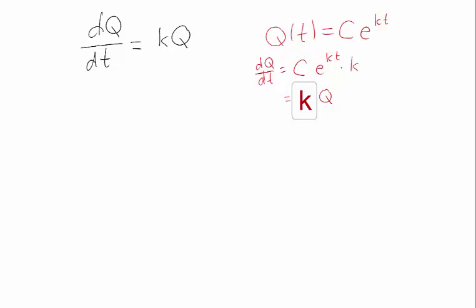And this is just k times Q. So if I have Q(t) as some constant times e to the kt, then it fulfills this equation. And actually this is the only function that fulfills this equation. Whenever I have a function such that its derivative is a constant times itself, it's going to look like this function in red.